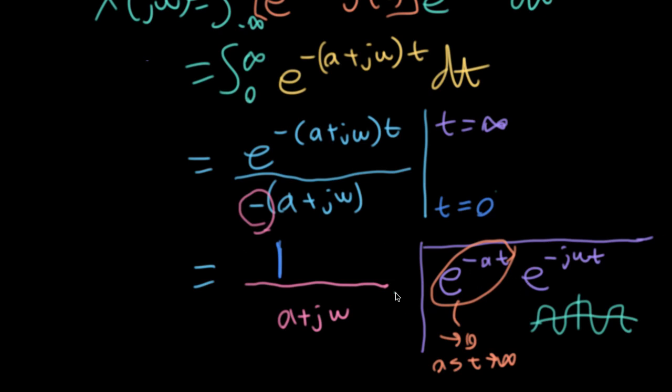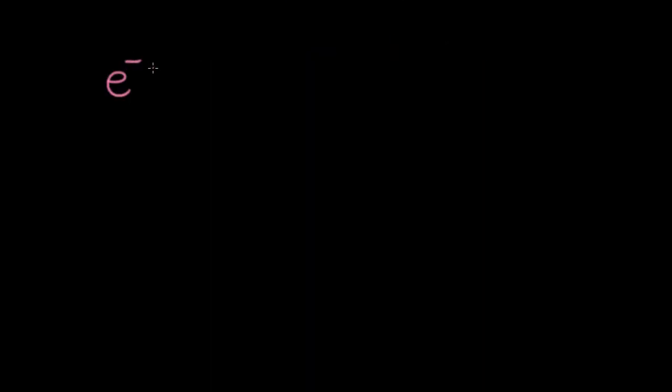So we've actually finished figuring out what the Fourier transform is. It's one over a plus j omega. So we've computed the first of what's going to be a long line of Fourier transforms. We'll say that e to the minus at u(t) Fourier transforms into one over a plus j omega.